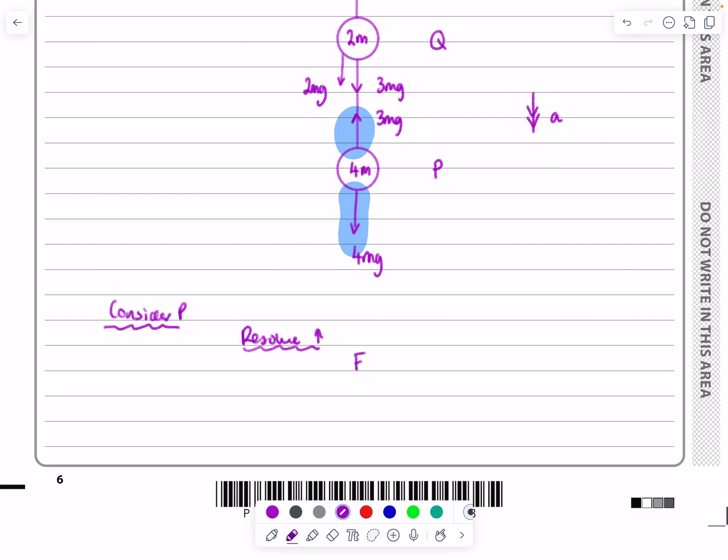We're going to say F equals MA, and I know that this force is accelerating downwards, so the 4mg must be bigger. 4mg minus 3mg is going to be equal to mass times acceleration, which equals 4MA.